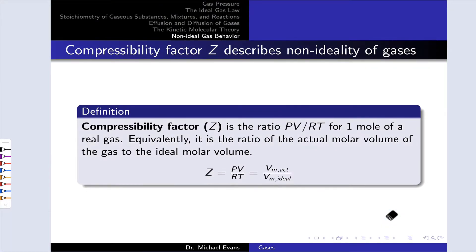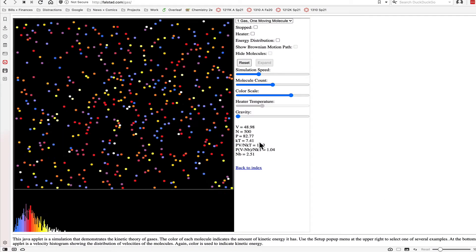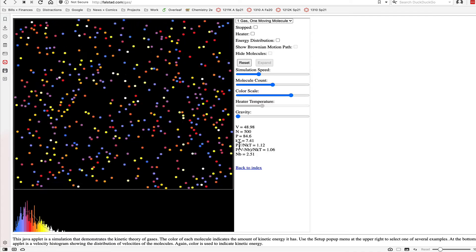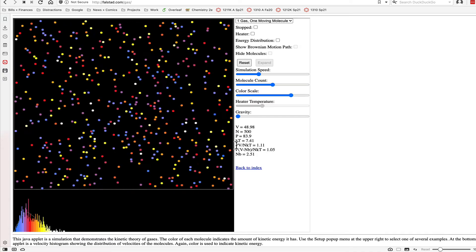Where I want to start is with a single number that can give us a measure of the ideality of a particular sample of gas. It's known as the compressibility factor, and this is, in fact, what's calculated in this simulation right here, the PV divided by NKT line.